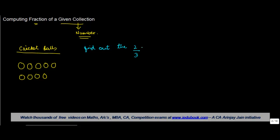How do you compute the number of balls which will comprise the two-thirds fraction of the total balls? We know the total number of balls is nine.